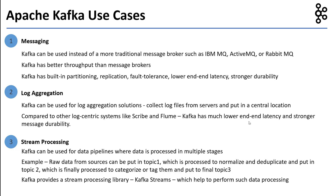For example, raw data from sources can be put into a topic, say topic one, from which the data is processed to normalize and remove duplicates and put in topic two, which can further be processed to categorize or tag them and put in a final topic, say topic three. Kafka provides a stream processing library called Kafka Streams which helps to perform such data processing tasks.